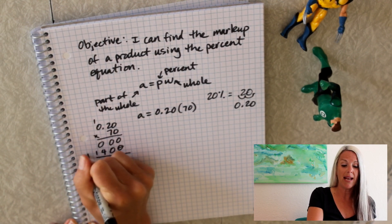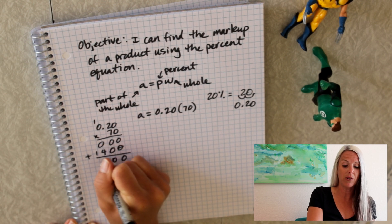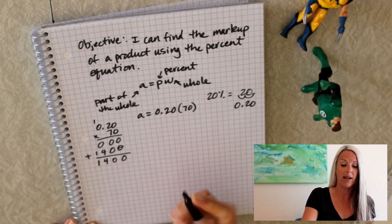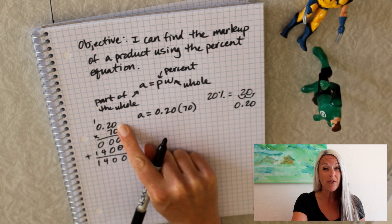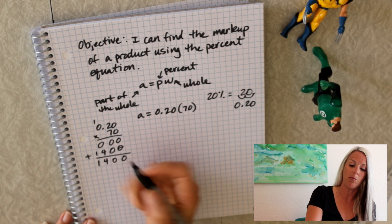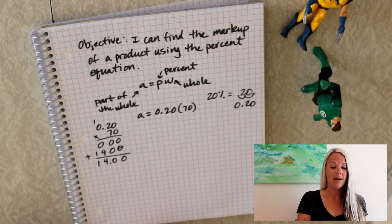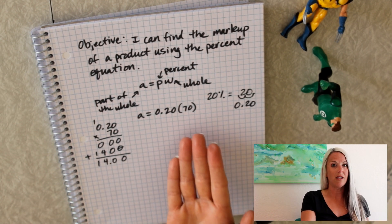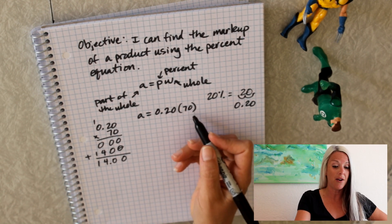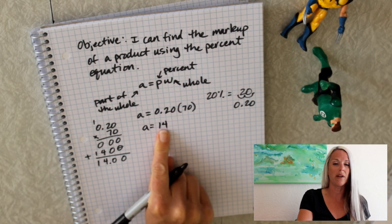So then we're going to go ahead and add all of that up. 0, 0, 0 plus 4 is 4 and 1. And we've got two values behind the decimal in the problem. So we're going to go ahead and put two values behind the decimal in the answer. So here we just discovered that 20% of 70 is 14. So the part of our whole is 14.